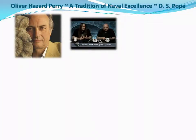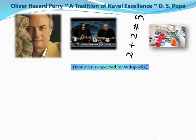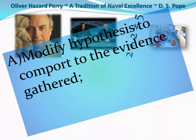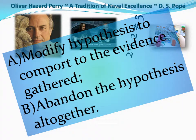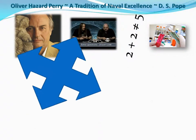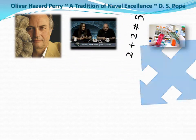So following the example of my physical science counterparts, one has only two choices when one's pet theory remains unsupported by evidence — it's not even supported by Wikipedia. A researcher may either: A) modify his hypothesis so it comports with the evidence gathered, or B) abandon the hypothesis altogether and try to go in a different direction. In this particular circumstance, I chose the second option. The study of history is so vibrant that one can veer in entirely different directions and delve into an interesting and engaging subject.